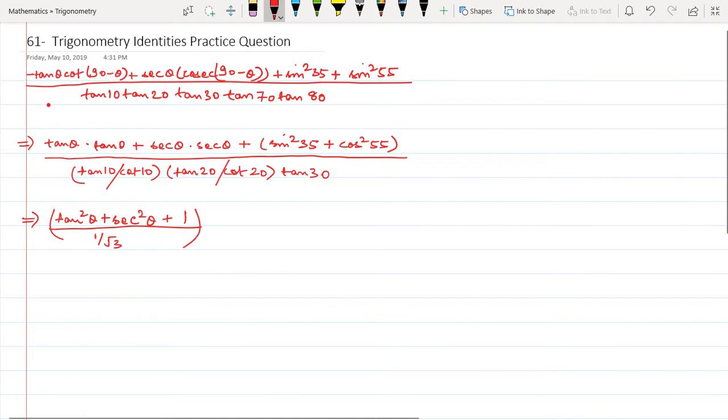Now, sec squared theta is equal to 1 plus tan squared theta. I'm sorry, I have missed a minus sign all the way through. This is actually minus tan theta, so this will be minus tan theta.